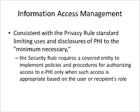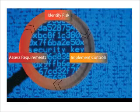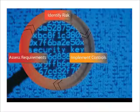Information access management — consistent with the privacy rule standard of limiting uses and disclosures of protected health information to the minimum necessary — requires a covered entity to implement policies and procedures for authorizing access to electronic protected health information only when such access is appropriate based on the user's or recipient's role. The people who accessed the celebrity's information we discussed earlier were not assigned to that account, so they had no appropriate basis for having access to that information.